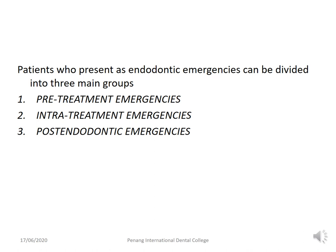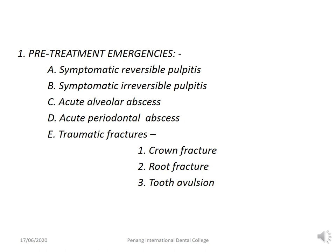Patients who present as endodontic emergencies can be categorized into three main groups: pre-treatment emergencies, intra-treatment emergencies, and post-endodontic emergencies. The conditions included in pre-treatment emergencies are symptomatic reversible pulpitis, symptomatic irreversible pulpitis, acute alveolar abscess, and acute periodontal abscess.